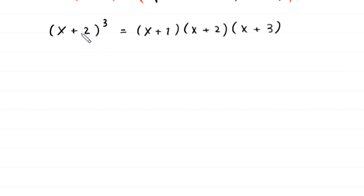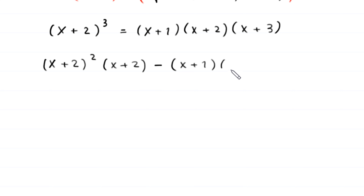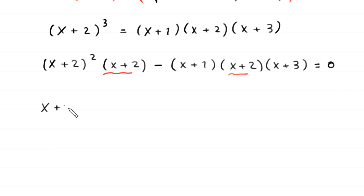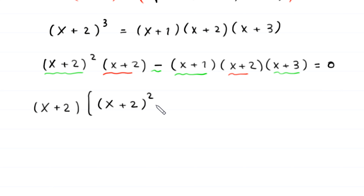Now we rewrite x plus 2 whole cubed as (x plus 2) squared times (x plus 2). We move the right hand side expression to the left, giving (x plus 2) squared times (x plus 2) minus (x plus 1)(x plus 2)(x plus 3) equals 0. We can see that x plus 2 is a common factor, so we factor it out: (x plus 2) times [(x plus 2) squared minus (x plus 1)(x plus 3)] equals 0.